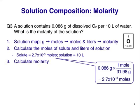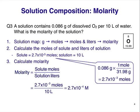We now have all the information we need to calculate the molarity. The equation is: molarity equals solute moles divided by solution volume in liters. Inserting our numbers gives us 2.7 × 10⁻⁴ moles per liter. This seems like a small concentration, but actually this is the approximate concentration of oxygen in natural waters, and it is enough for aquatic organisms to survive on.